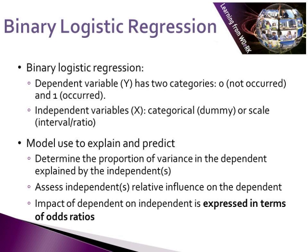For example, the dependent variable might be employment status — unemployed and employed — and we might be interested in how this is related to gender, age, ethnicity, socioeconomic status and so on. In this case we would not carry out a multiple linear regression, as many of the assumptions of this particular technique would not be met.